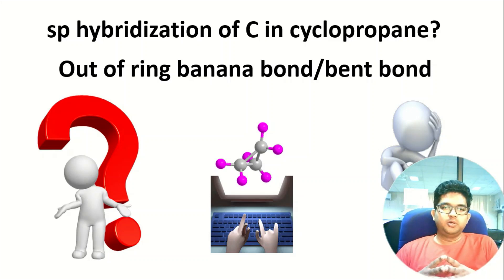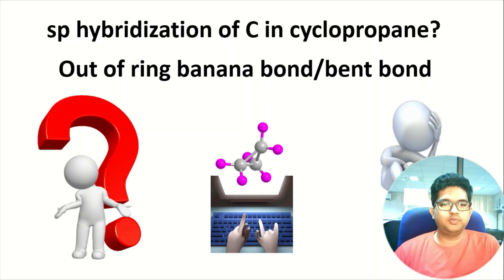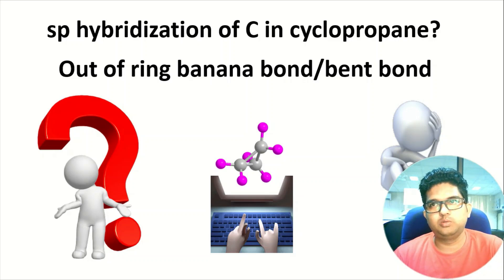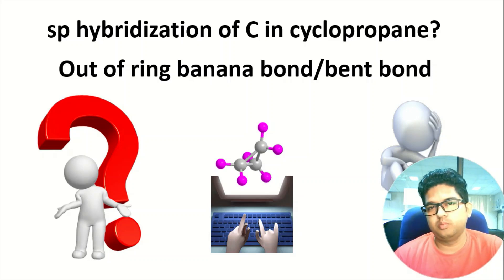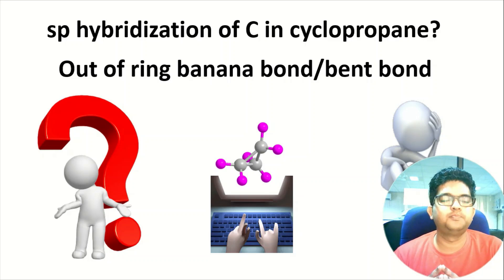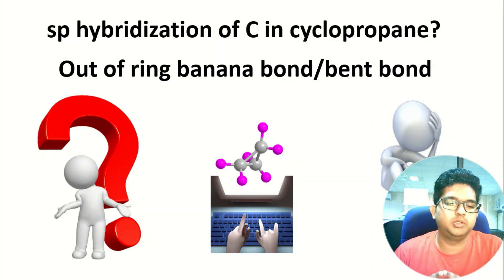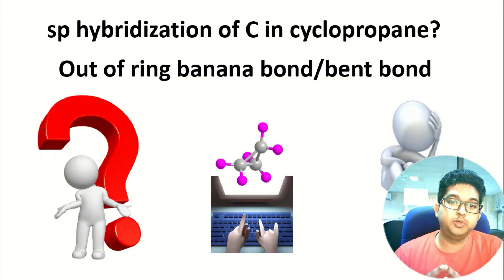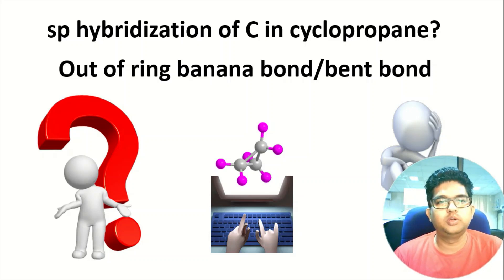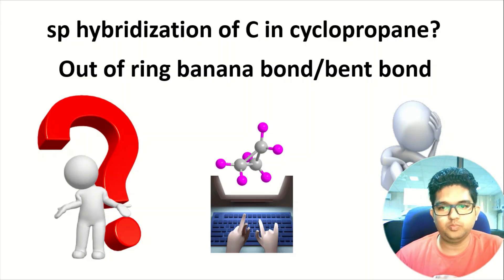Hello everyone, welcome to Quantum Guruji. First of all, thank you everyone for liking my videos and my content. Today in this video I'm going to discuss about the banana bond in the dimer of small membered rings. You might have heard about banana bond or bent bond in cyclopropane molecules, where electron density is out of the bond and out of the cycle, and it has little overlapping of orbitals which results in the bent and banana bond in cyclopropane. I'll also be talking about hybridization and new concepts and theories in this molecule. Let's get started.